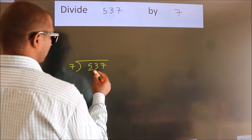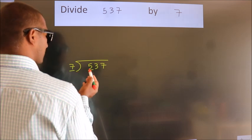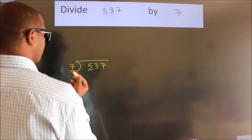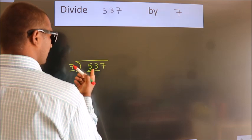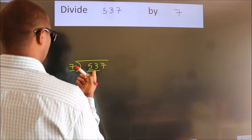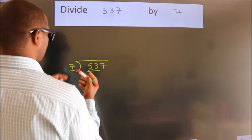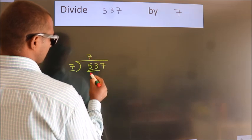Here we have 5. Here 7. 5 smaller than 7. So we should take two numbers, 53. A number close to 53 in 7 table is 7 times 7 equals 49.